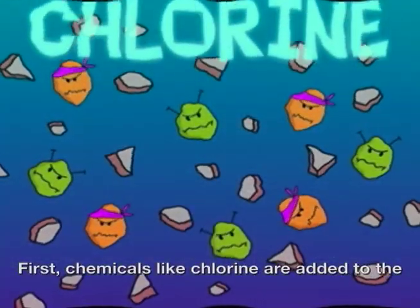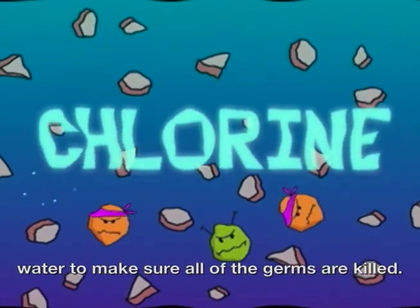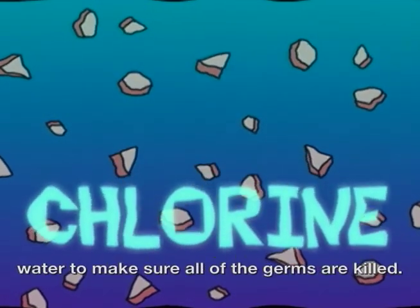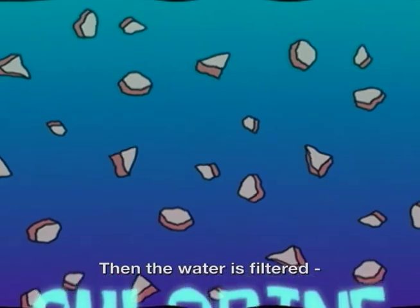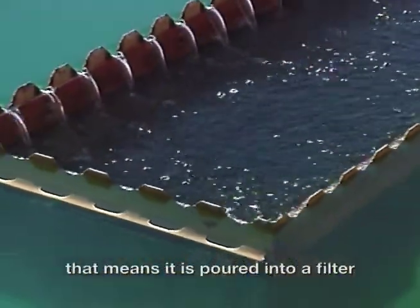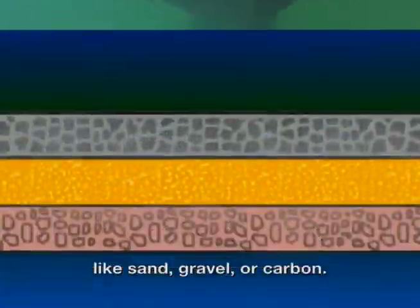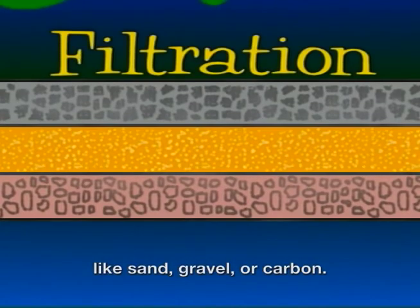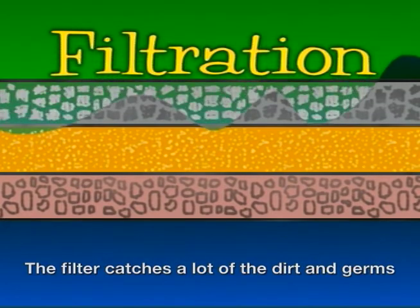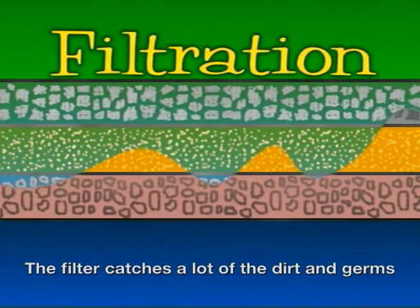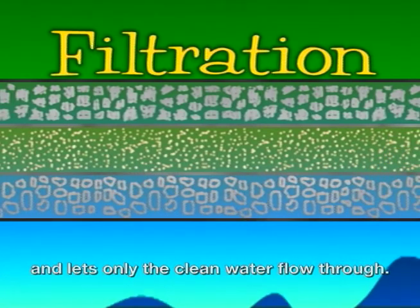First, chemicals like chlorine are added to the water to make sure all the germs are killed. Then the water is filtered — that means it's poured into a filter like sand, gravel, or carbon. The filter catches a lot of the dirt and germs and lets only the clean water flow through.